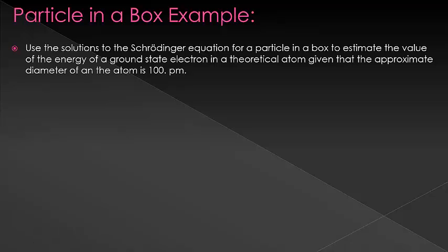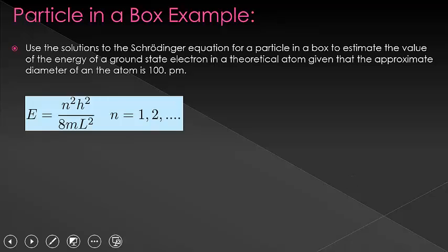Let's do a quick example. Use the solution to the Schrödinger equation for a particle in the box to estimate the value of the energy of a ground state electron in a theoretical atom, given that the approximate diameter of the atom is 100 picometers. So this would be an extremely rough model. It's not even extended to three dimensions. But we can still use it as a model for some things. And we'll start with our energy level that I gave you.